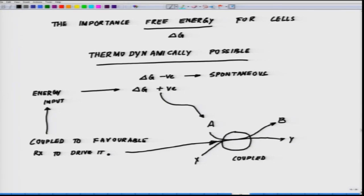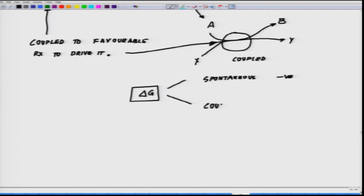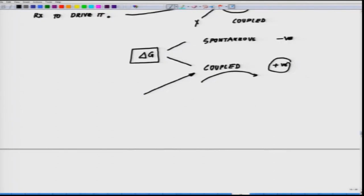The answer to whether a reaction can occur spontaneously — or needs to be coupled to another reaction when delta G is positive — is obtained by reference to free energy. The total change in free energy during a set of reactions determines whether the entire reaction sequence can occur. This thermodynamic parameter delta G is critical for determining whether a reaction is spontaneous.